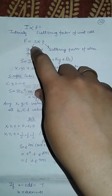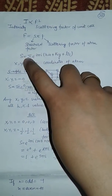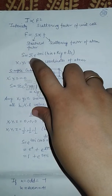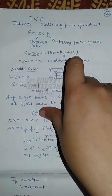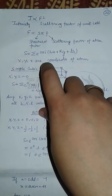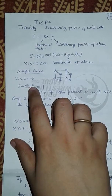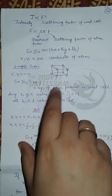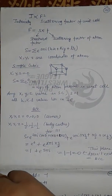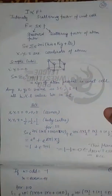We know intensity is directly proportional to the scattering factor of the unit cell. F equals S into F, where S is the structural factor and F is the scattering factor of the atom. The structural factor S equals sigma e to the power 2 pi i times (h·x + k·y + l·z), where x, y, z are coordinates of the atom. For simple cubic, x y z is 0, so S equals sigma e to the power 0, which is 1. Therefore, 1 is the number of atoms present in the unit cell, and for any hkl values in simple cubic, S equals 1, so all hkl values lie in simple cubic.